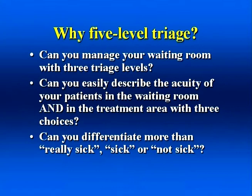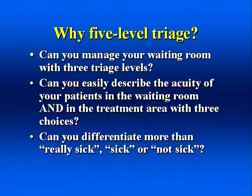While the group stopped short of recommending a particular system, the published paper suggests either the Canadian Triage and Acuity System or the Emergency Severity Index are acceptable scales. The need for five-level triage is clear from a national perspective. We realize many of you may still be using a three-level system, so you must evaluate the following questions: Can you manage your waiting room with three triage levels? Can you easily describe the acuity of your patients with only three choices? When faced with 10, 20, or 30 patients waiting in the typically overcrowded emergency department, can you differentiate using only three levels — really sick, sick, and not so sick? Probably not.